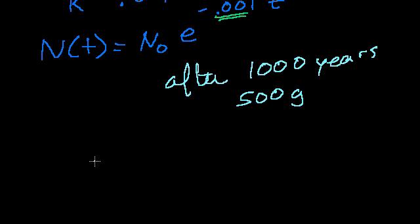So how much did I start off with? So essentially I need to figure out n sub 0. Right, I'm saying that after 1,000 years, so n of 1,000.